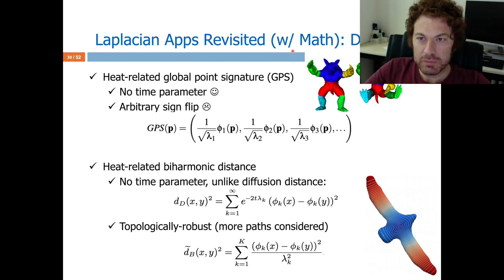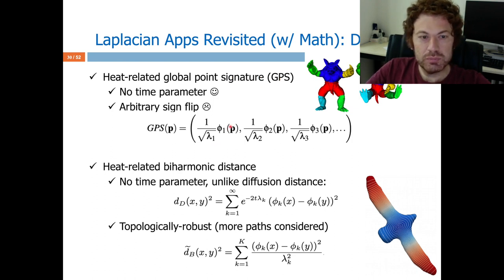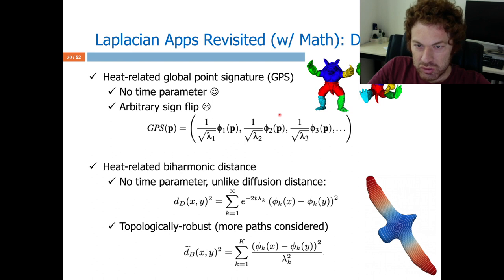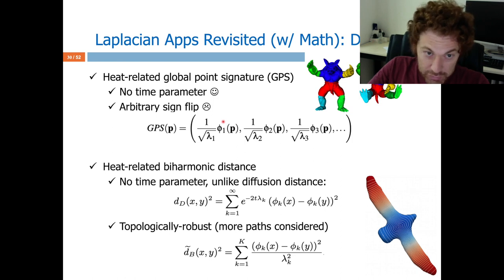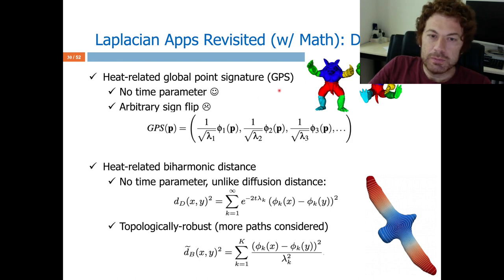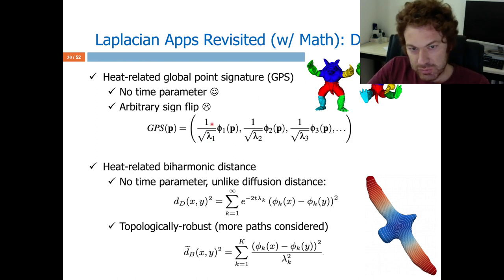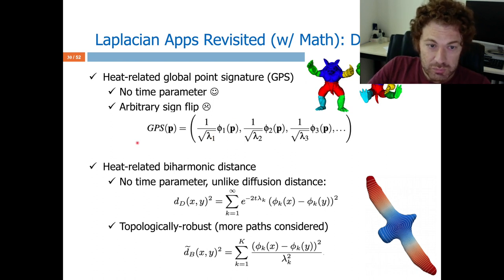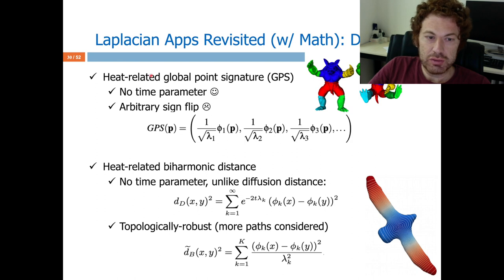Going back to the applications, we have handled the descriptors. Here is another descriptor called the global point signature: given a point, I describe it with multiple dimensions. Each dimension gets the corresponding component from the eigenvector — first vector, second vector — using the small ones, normalized with the corresponding eigenvalue. Distance is also related to this spectrum: instead of multiplying eigenfunctions as in the heat kernel case, I subtract the corresponding values to find the distance from x to y, again time-based.